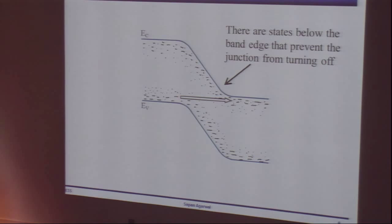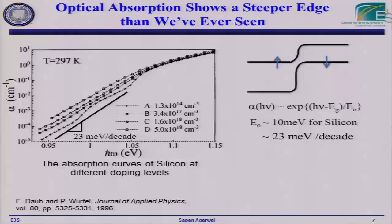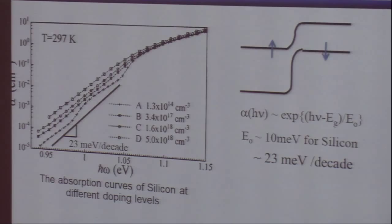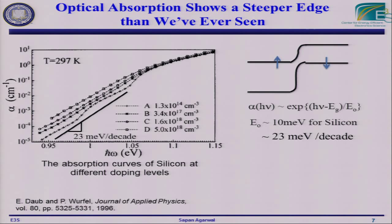For a first look, we can examine optical absorption in a semiconductor as an indication of the band edge and band tails. In a perfect semiconductor, absorption would abruptly drop to zero at the band edge. Instead, in silicon, the optical absorption gradually falls off exponentially — it takes 23 millielectron volts to get a decade change in absorption. The reason is phonons and thermal vibrations cause strains which shift energy levels up and down, smearing out the band edge. This is going to be difficult to engineer.